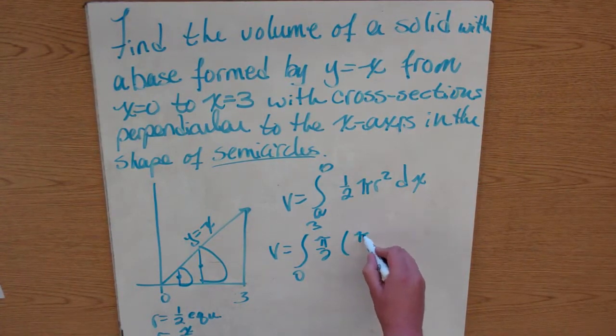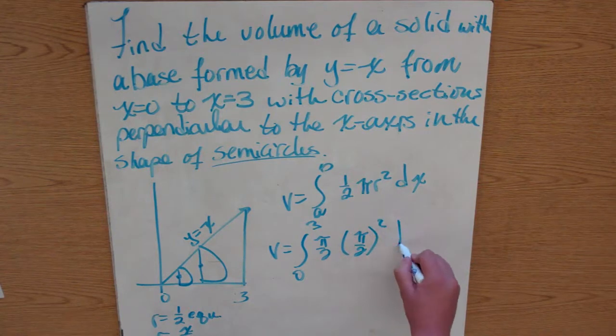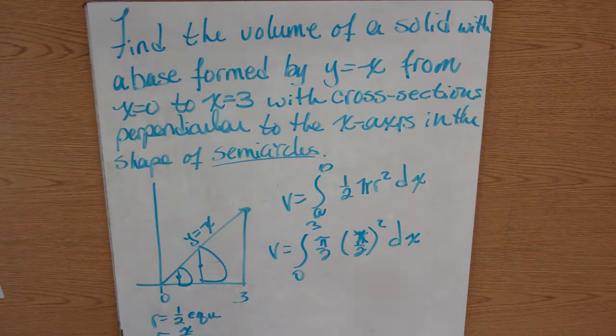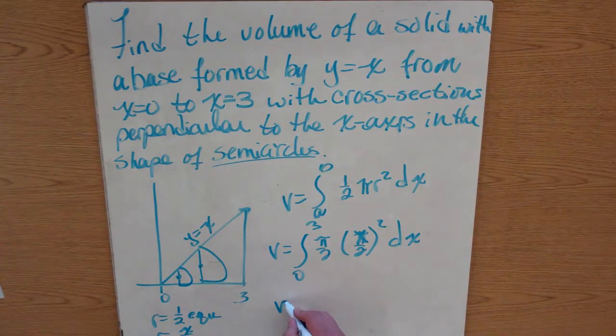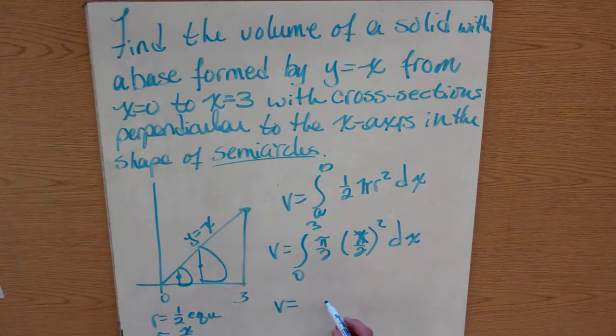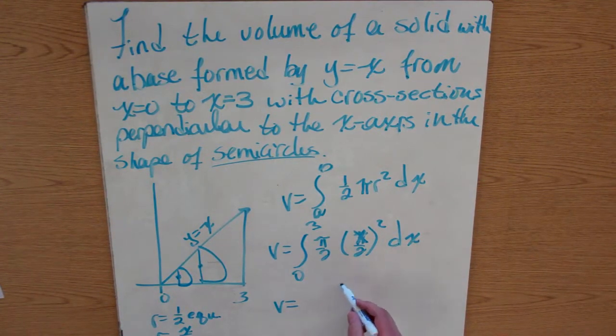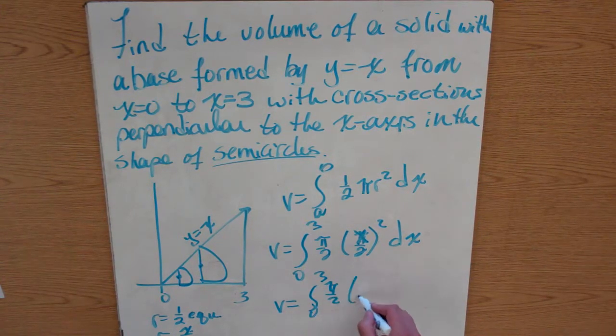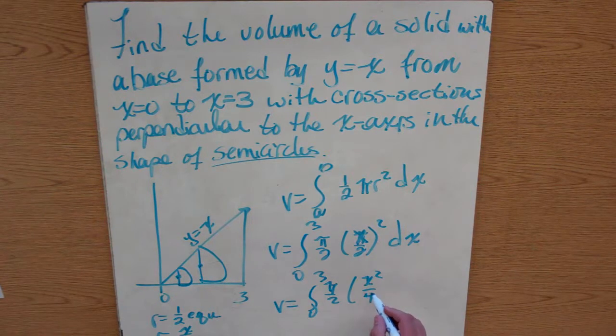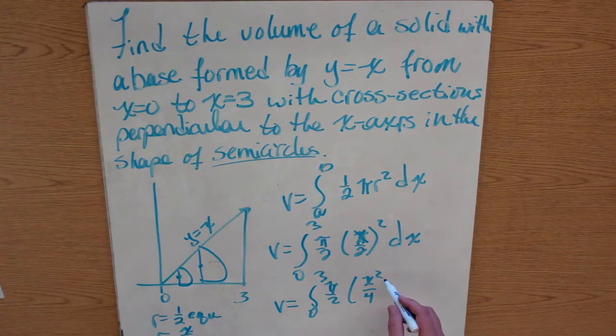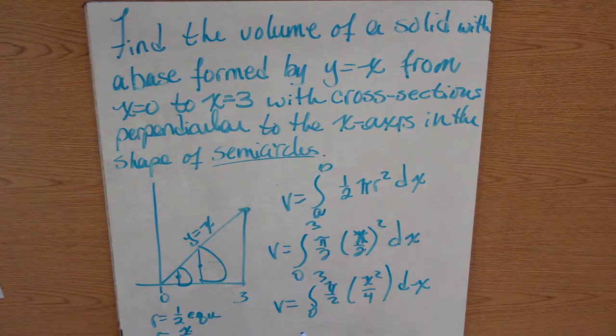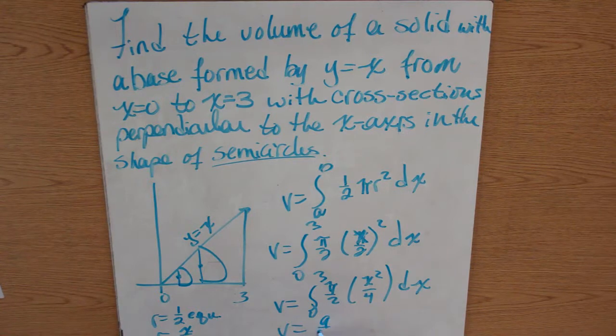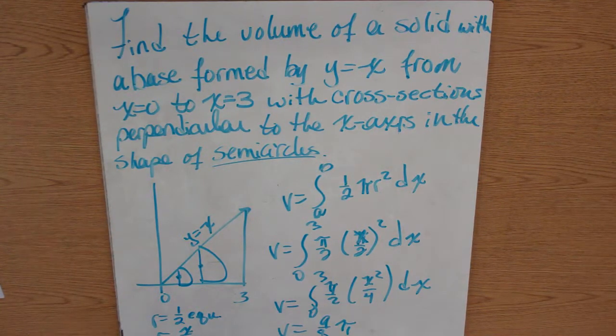So our volume from a to b of pi over 2, all you do is combine that, of x over 2 squared dx. Now you simply integrate this, so our volume is going to be, when you integrate this, well first square it, so 0 to 3 pi over 2 of x squared over 4 dx. And after you integrate this, evaluate it from 0 to 3, it's just like we've been doing, you get 9 over 8 pi.